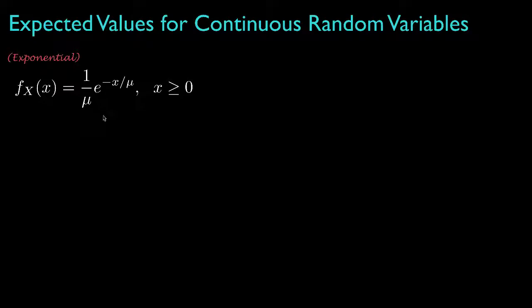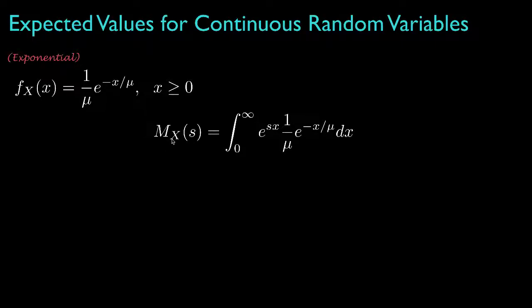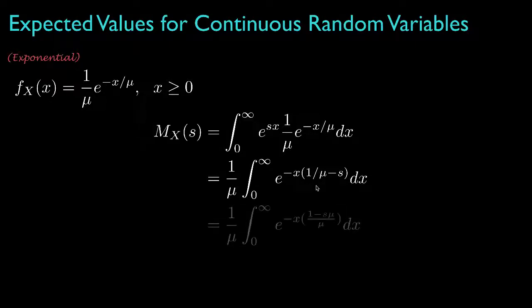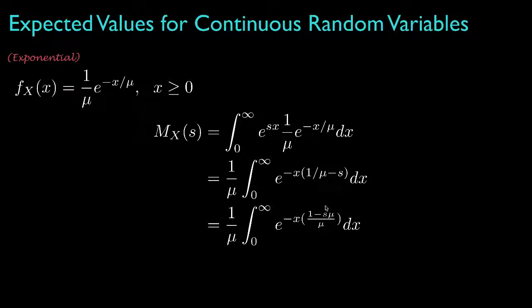As an example, let's use an exponential density function with mean parameter mu. The moment generating function, which we'll call M sub x, is the integral of e to the sx times the density, for which we can gather all terms multiplying x up into the exponent. Reorganizing that exponent, we see this integral will only converge when the real part of s times mu is less than one, so that the real part of the exponent is negative. Since we'll be evaluating at s equals zero, we'll be fine, but for other uses we'd need to verify this condition is satisfied.